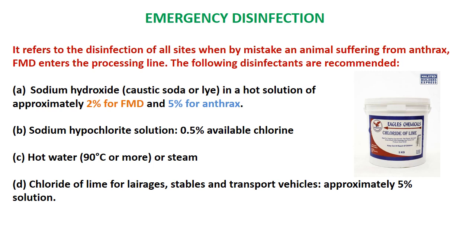Emergency disinfection refers to the disinfection of all sites when an animal suffering from anthrax, FMD, or similar diseases enters the processing line or is accidentally slaughtered. Recommended disinfectants include: sodium hydroxide in a hot 2% solution for FMD and 5% for anthrax; sodium hypochlorite solution with 0.5% available chlorine; hot water at minimum 90°C or steam; and chloride of lime at 5% solution for larges, stables or transport vehicles.